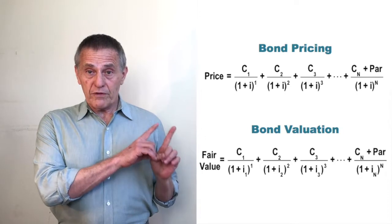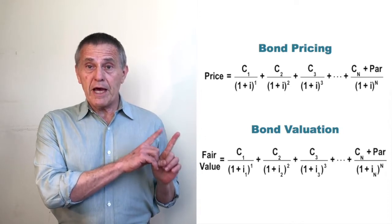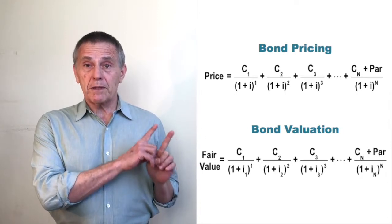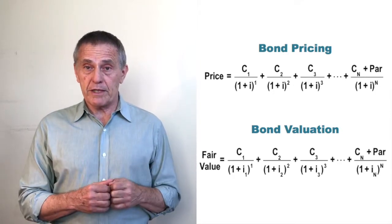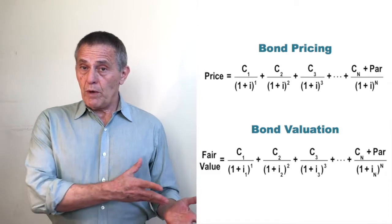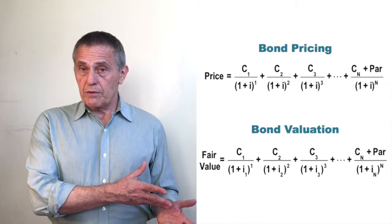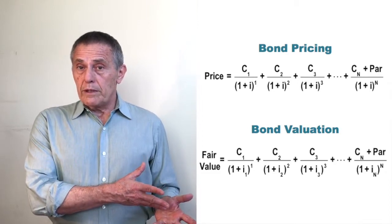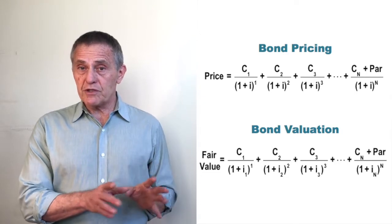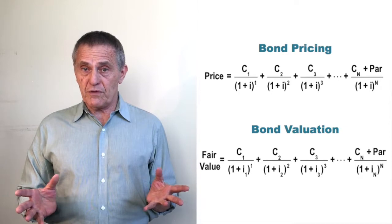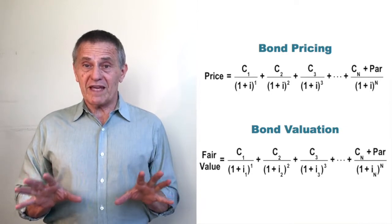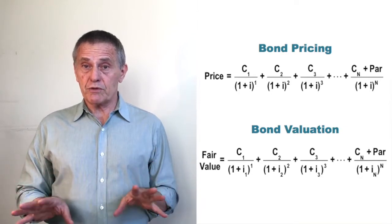But at a more substantive level, what's questionable when trying to estimate fair value about discounting all the cash flows by exactly the same interest rate? As indicated before, that is the convention for pricing, again, because we want all market participants to interpret the yield to maturity on a bond as representing the same dollar price. So why not do that for fair value?